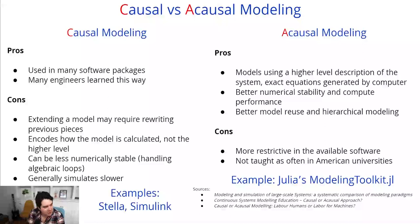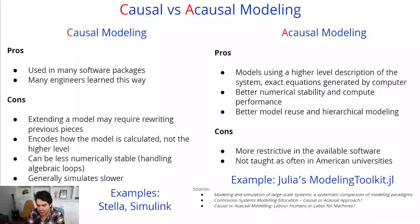One slide does not do this justice. There are many sources that have shown this to be the case — you can believe at face value that acausal modeling is more efficient in human time. One source is even called 'labor for humans or labor for machines,' where acausal modeling is shown to take less labor to build. But I feel the high-level description doesn't do it justice, so what I want to do instead is show by example why these tenets are true and why you want to be doing acausal modeling.